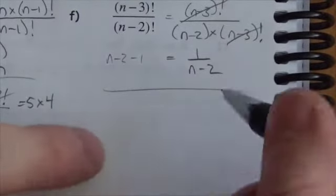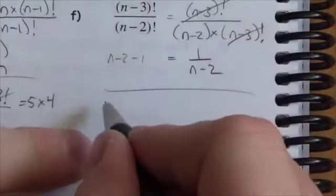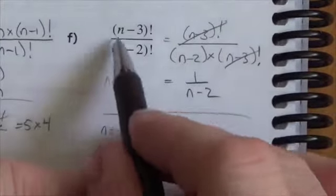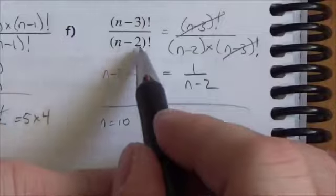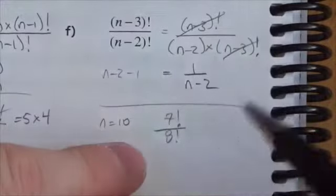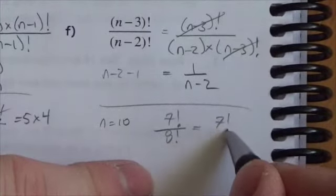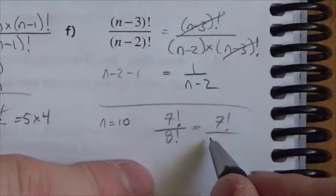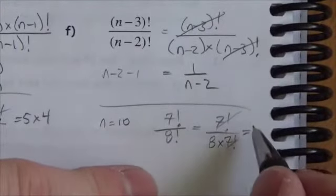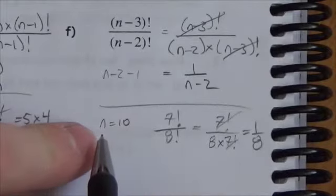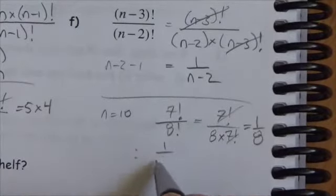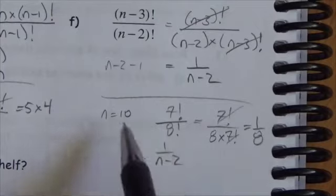Let's verify by picking n equals 10. Then (n minus 3) factorial is 7 factorial, and (n minus 2) factorial is 8 factorial. Expanding: 8 times 7 factorial over 7 factorial — the 7 factorials cancel, leaving 1 over 8. Since N was 10 and 8 is N minus 2, this confirms our answer of 1 over (n minus 2).